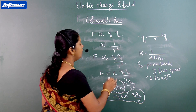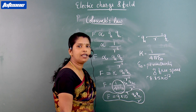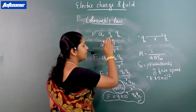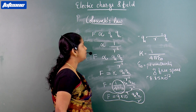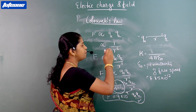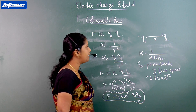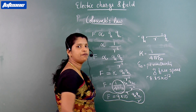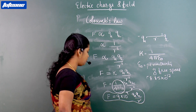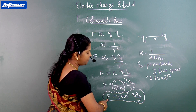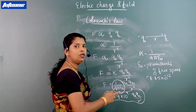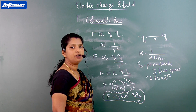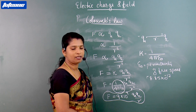Coulomb's law states that the force of attraction or repulsion between two charges is directly proportional to the product of the magnitude of the two charges and inversely proportional to the square of the distance. The final equation is F = 9 × 10⁹ · Q1·Q2 / R².